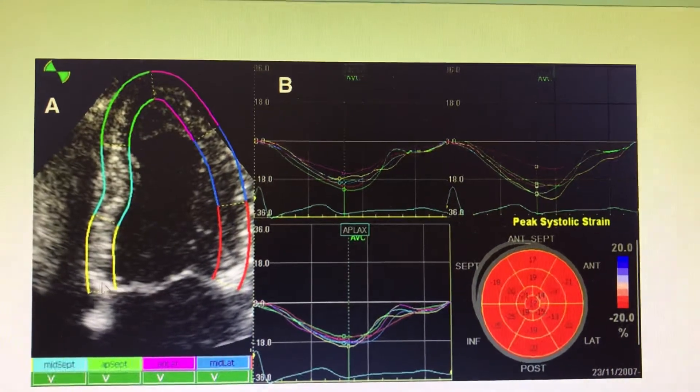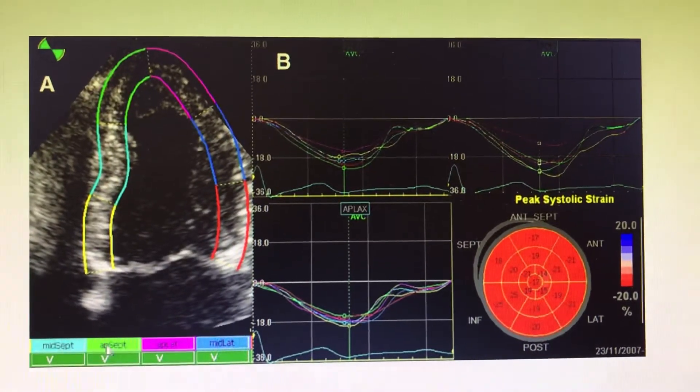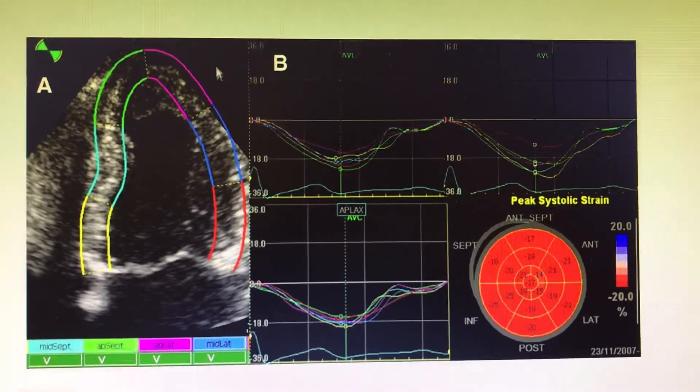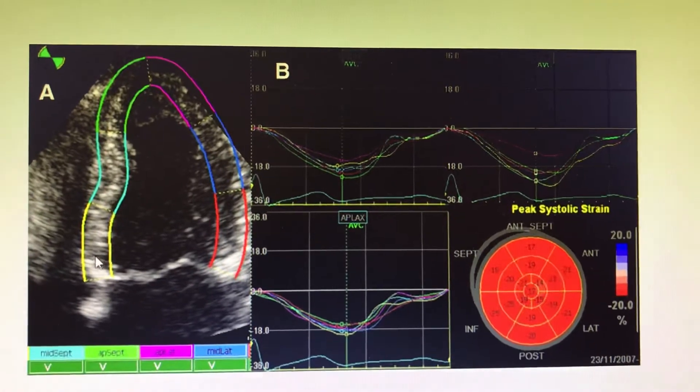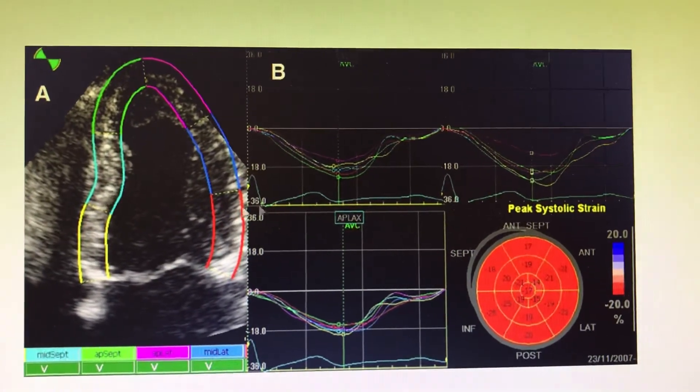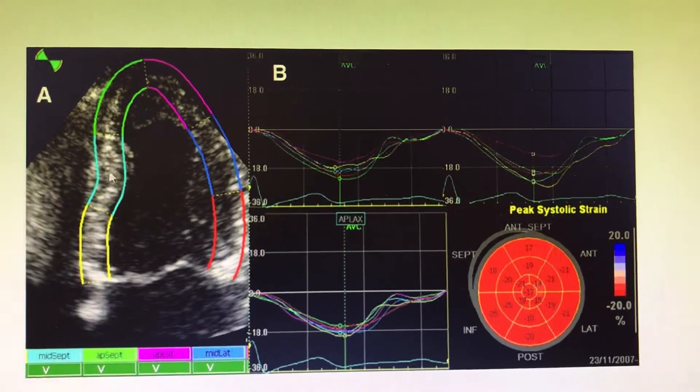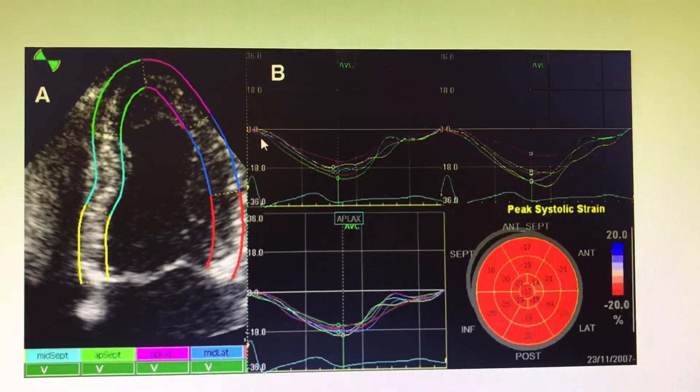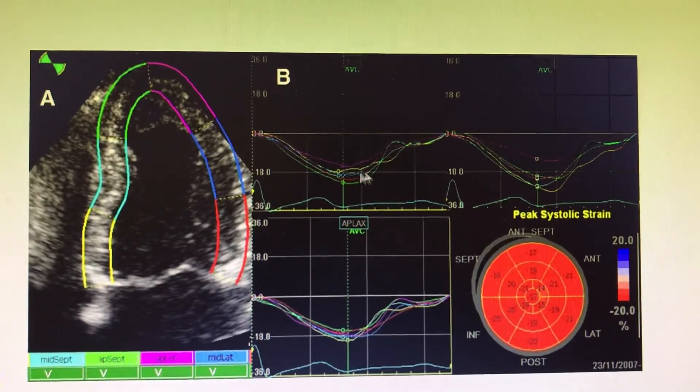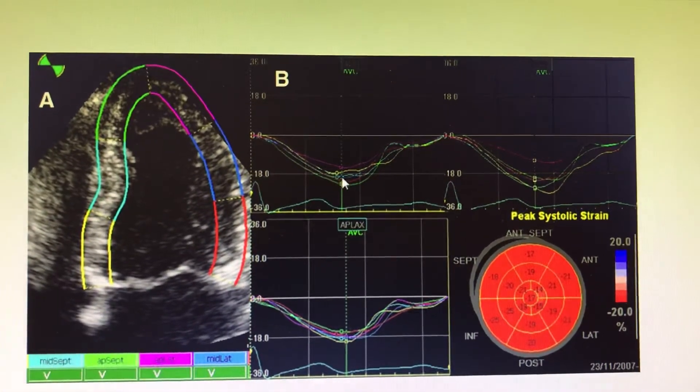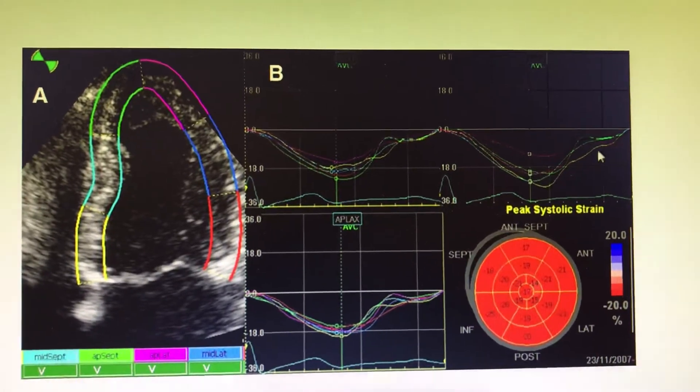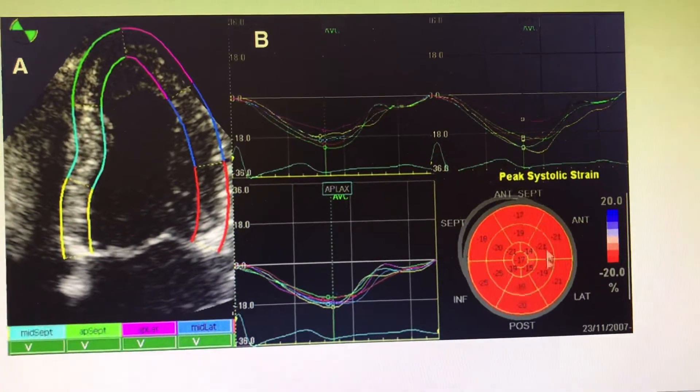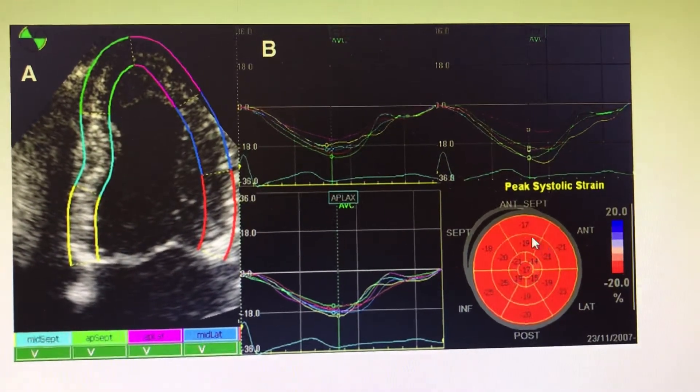You place speckles in separate segments like mid-septal, apical septal, apical lateral, and mid-lateral, giving each a different color code. When you run the software, it measures the speckle movement from one place to another. The contraction of the speckle is tracked over time, similar to M-mode, and the software builds its own region.